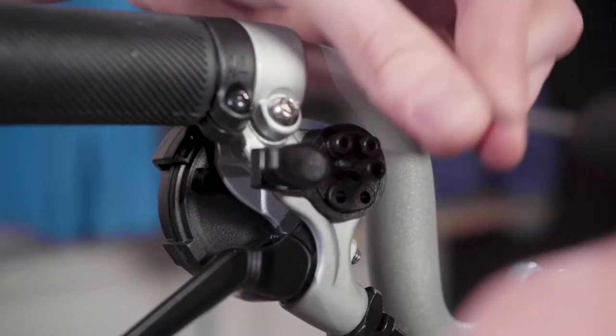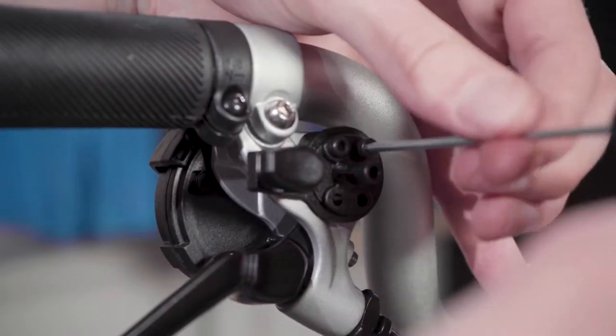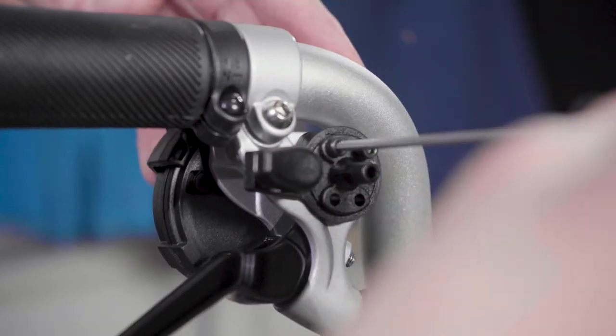Remove the two fixing screws using the 2.5mm hex key and remove the bell base and the mounting block from the brake lever.